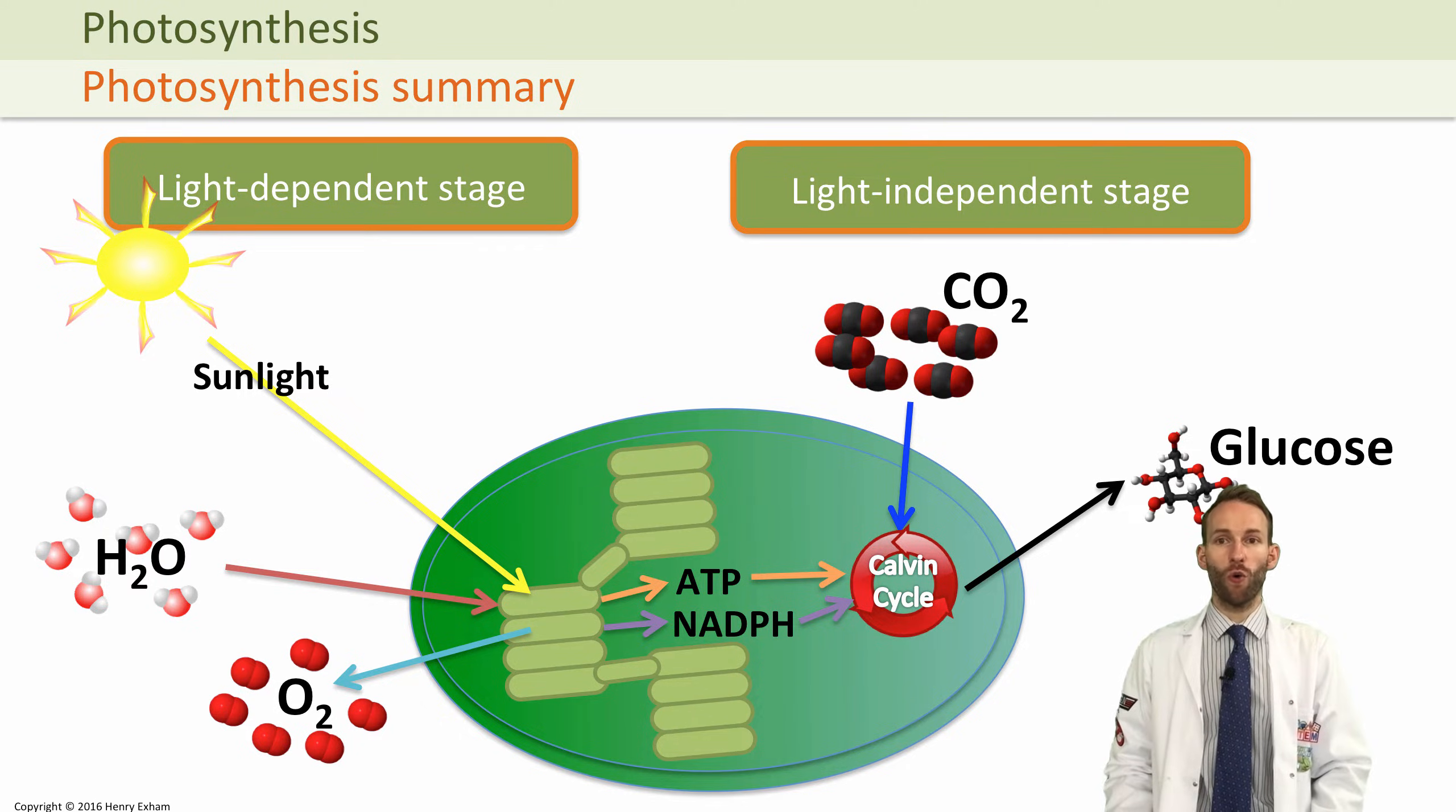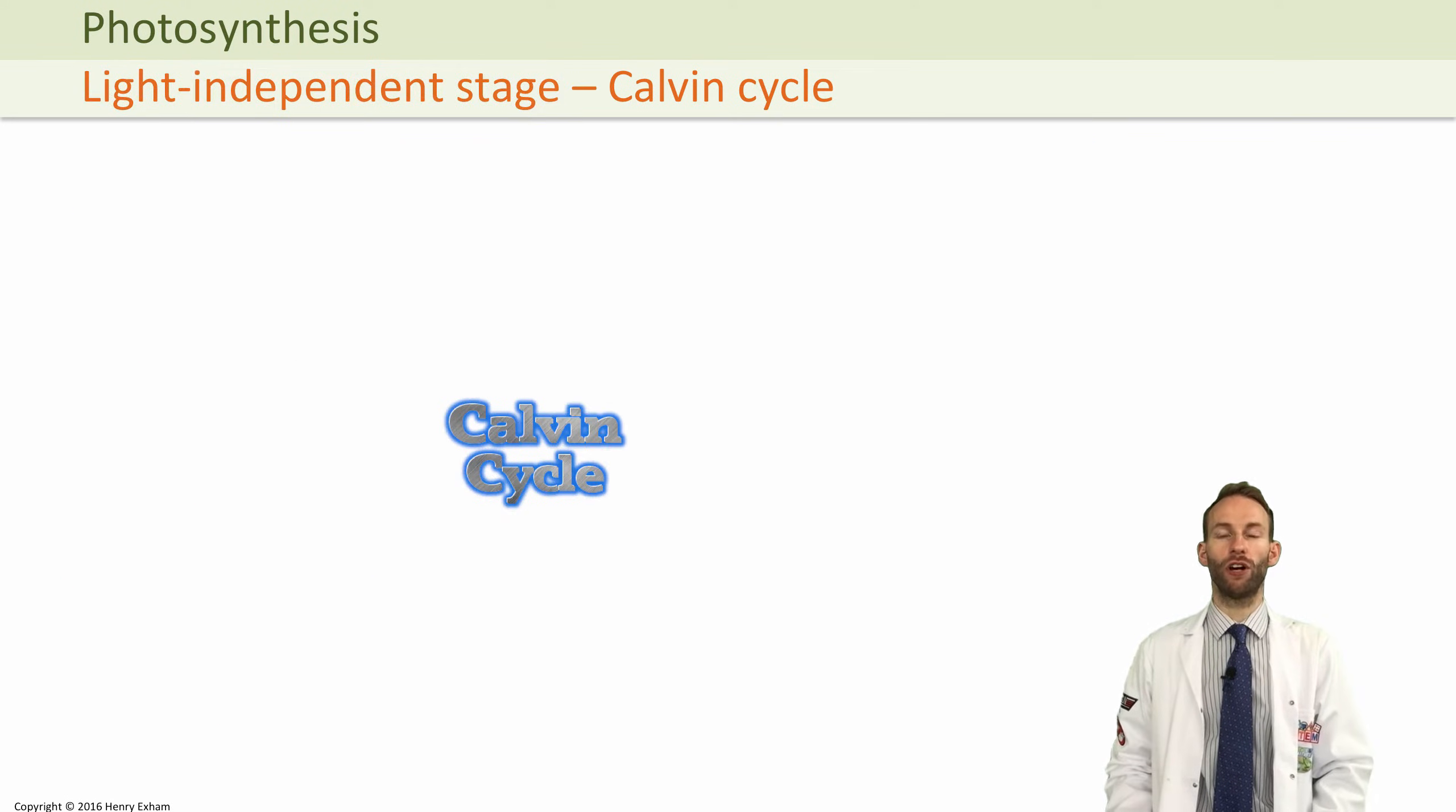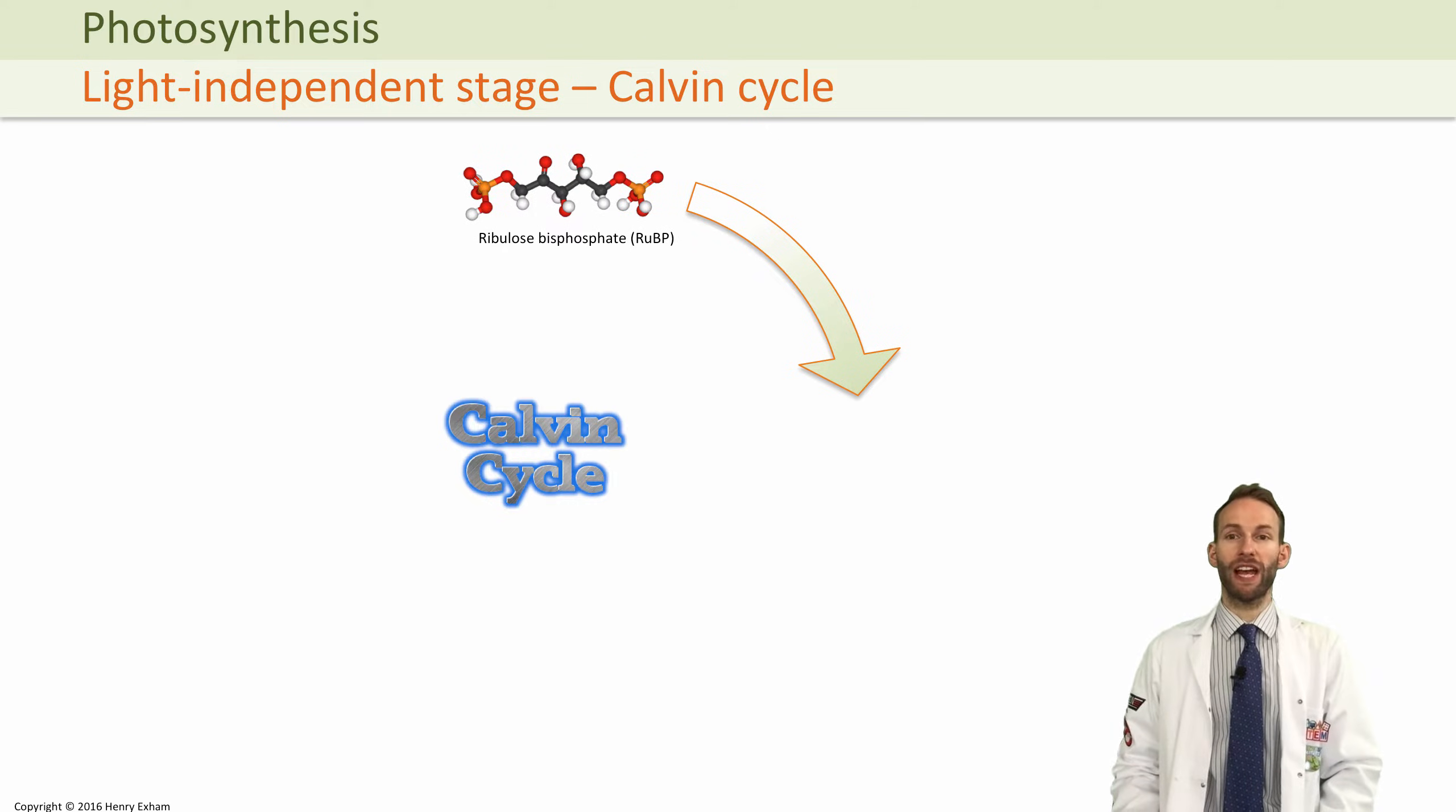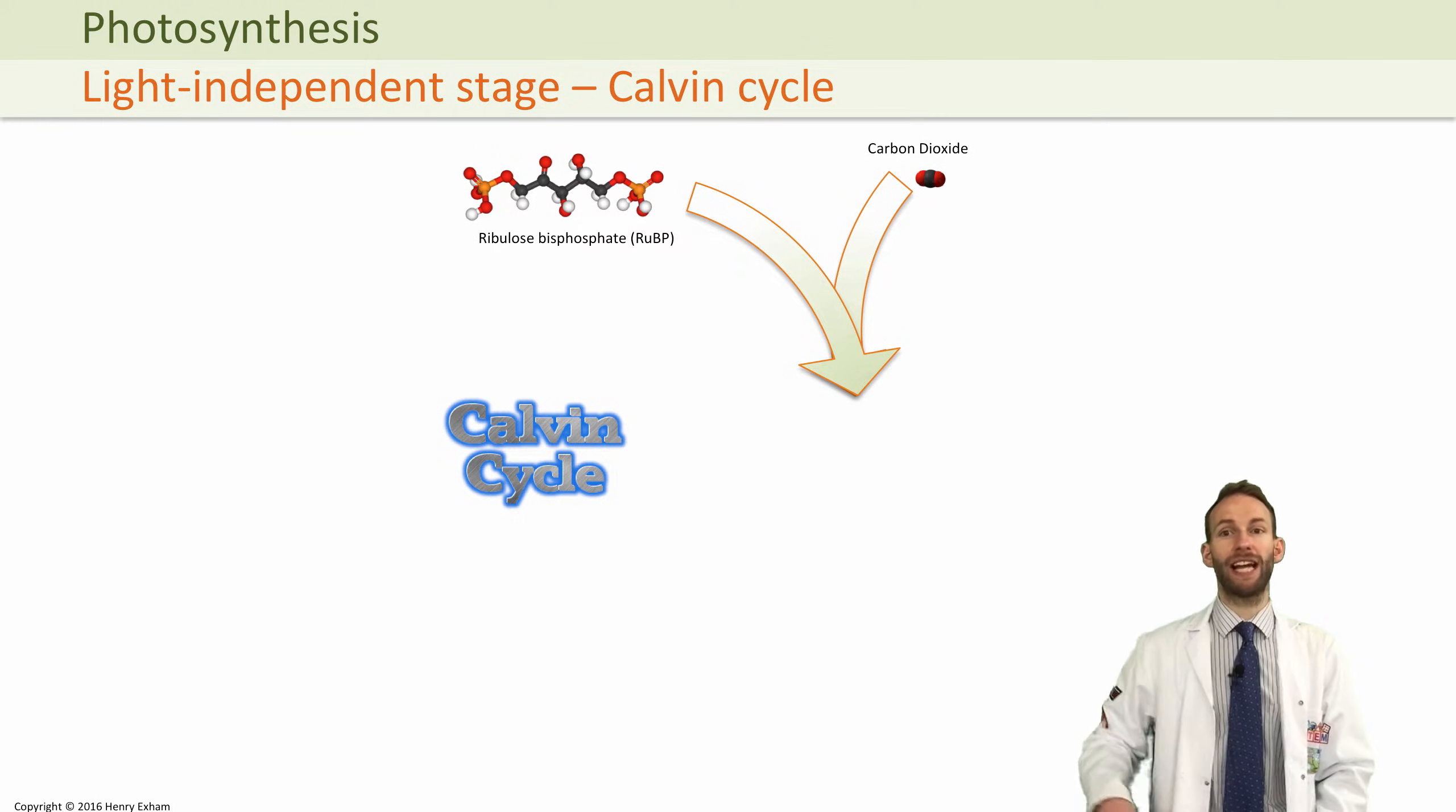In the Calvin cycle, we start with a molecule called RUBP, ribulose bisphosphate, and we combine that with a molecule of carbon dioxide which comes from the atmosphere. To do that, we need an enzyme called rubisco.